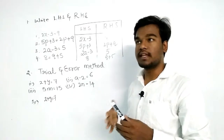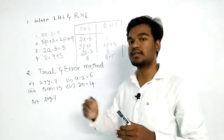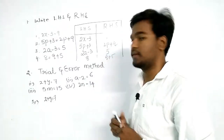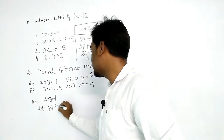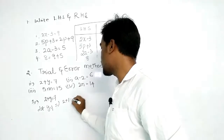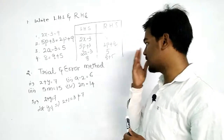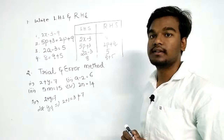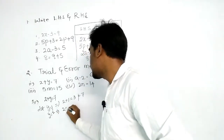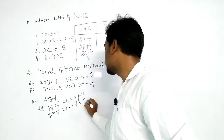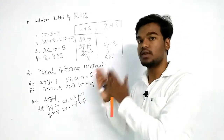We can start from 1 in the trial and error method, substituting values into the variable. Let y equal to 1: then 2 plus 1 equals 3, which is not equal to 7 — so y equals 1 is not the answer. Then let y equal to 2: 2 plus 2 equals 4, which is also not equal to 7. You must ensure LHS equals RHS.